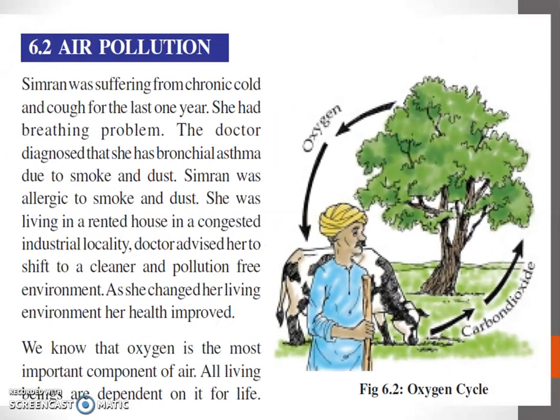Air Pollution. Simran was suffering from chronic cold and cough for the last one year. She had a breathing problem. The doctor diagnosed that she has bronchial asthma due to smoke and dust. Simran was allergic to smoke and dust. She was living in a rented house in a congested industrial locality. The doctor advised her to shift to a cleaner and pollution-free environment. As she changed her living environment, her health improved.